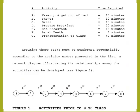Here is a simple example to illustrate PERT activities. To attend a 9:30 class, we can identify the following activities: wake up and get out of bed — 10 minutes; shower — 10 minutes; dress — 10 minutes; prepare breakfast — 20 minutes; eat breakfast — 15 minutes; brush teeth — 5 minutes; transportation to class — 40 minutes.